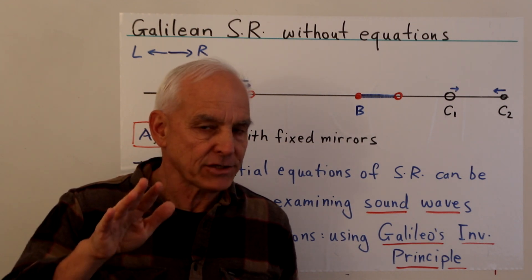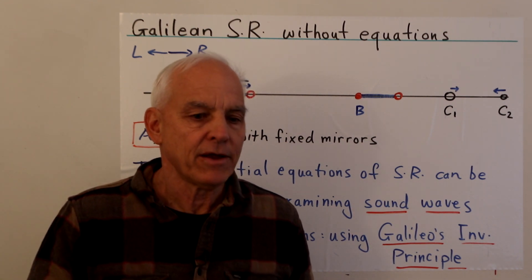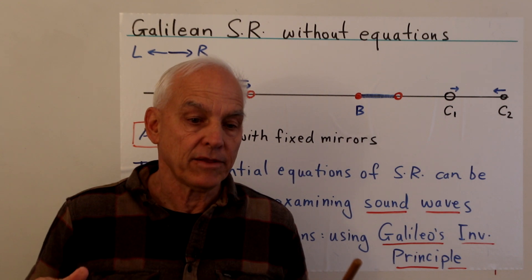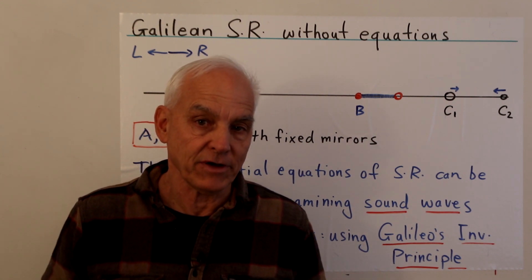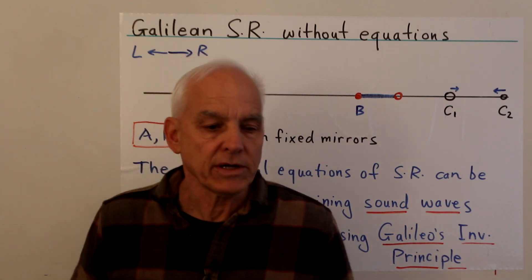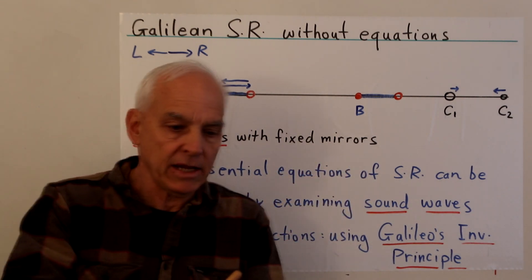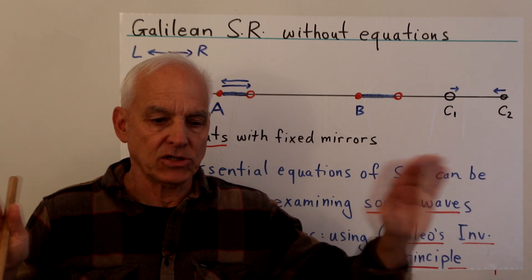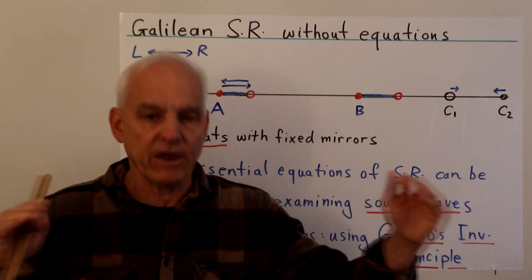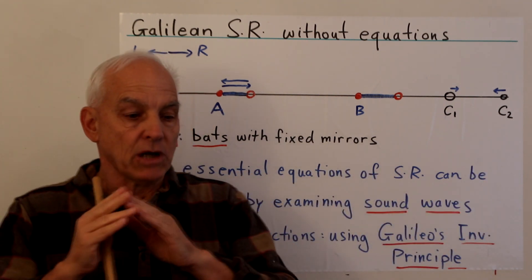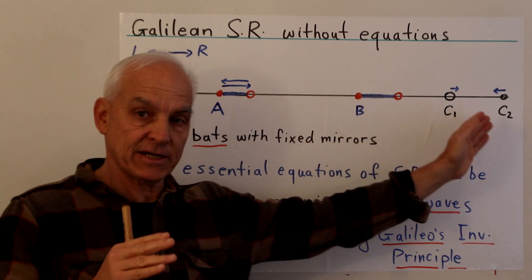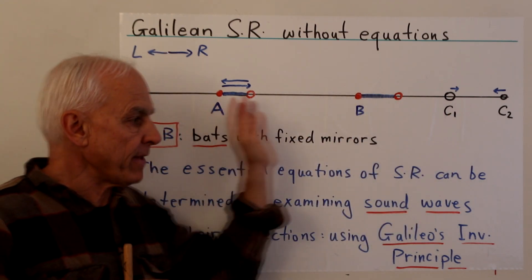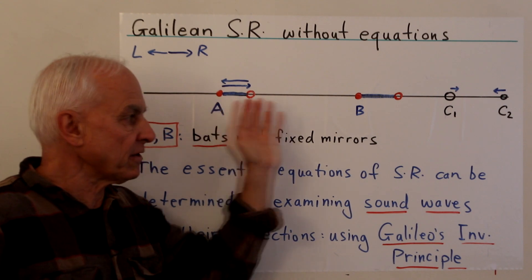With high school, maybe first year math, derive essentially the equations for special relativity. We're going to simplify things dramatically by stripping away all unnecessary and complicated things and just thinking about physics in a very elementary way - just a one-dimensional space devoid of everything except for just one or two observers and maybe a few things to observe.